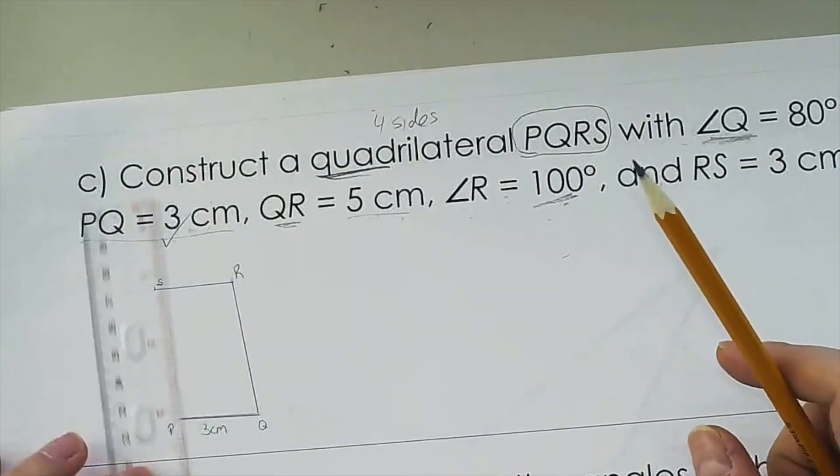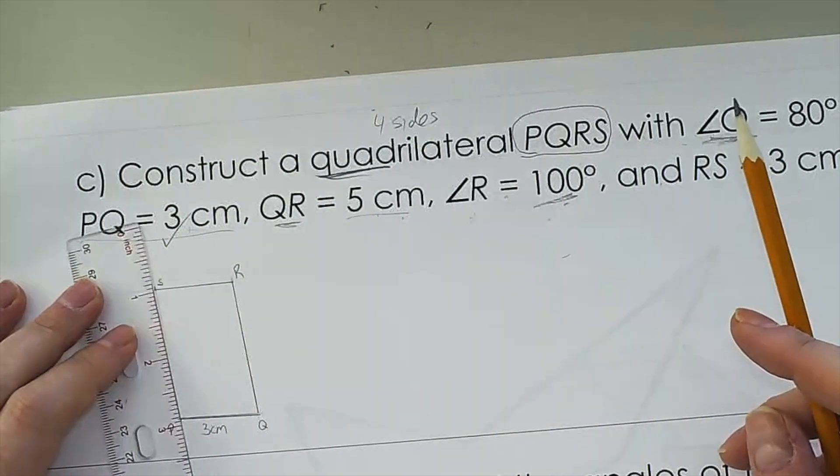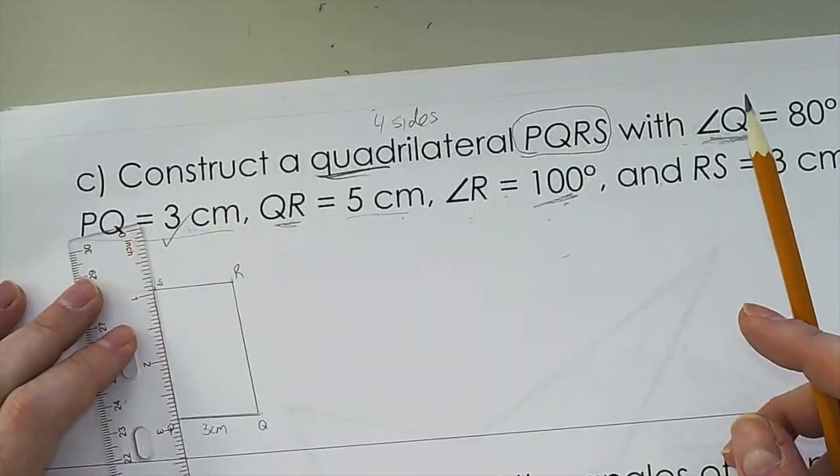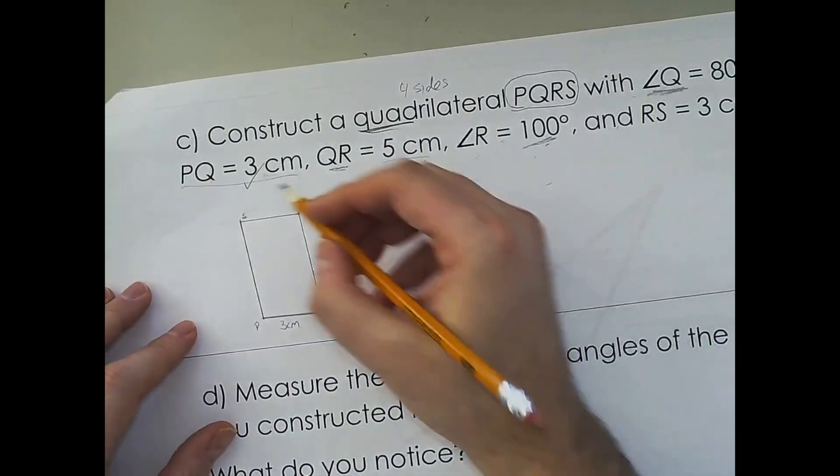And now I have to join this because it is a quadrilateral. We need to join it. So what we do know is that RS is 3 centimeters.